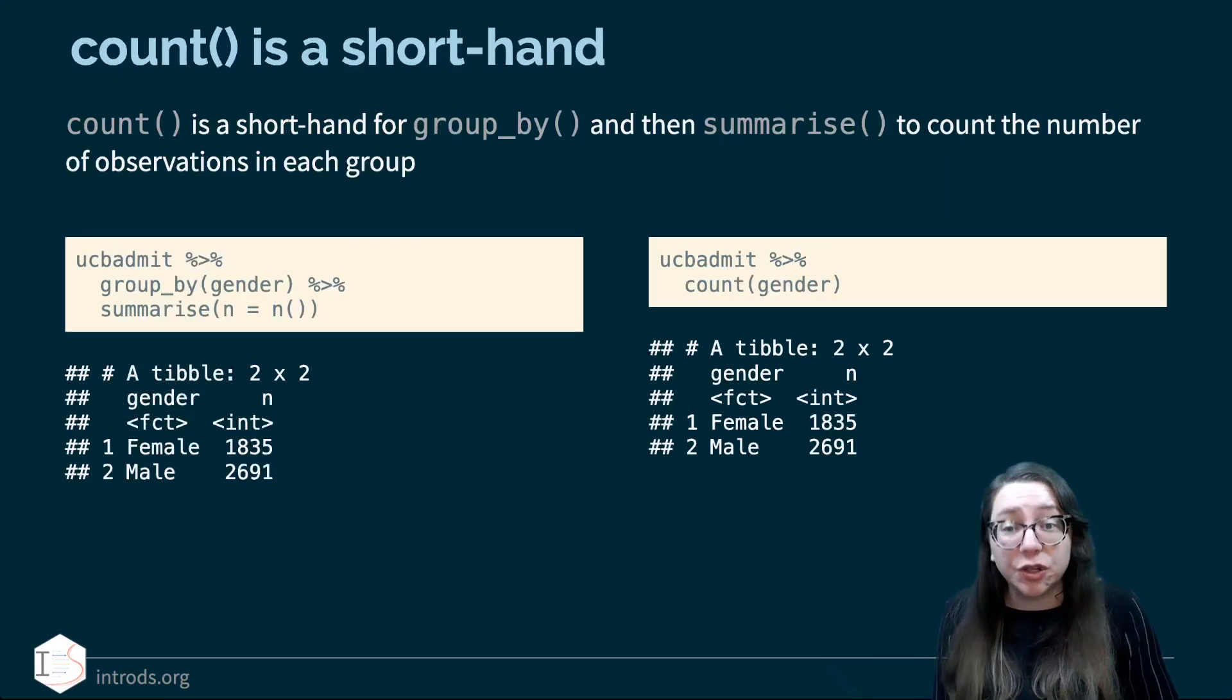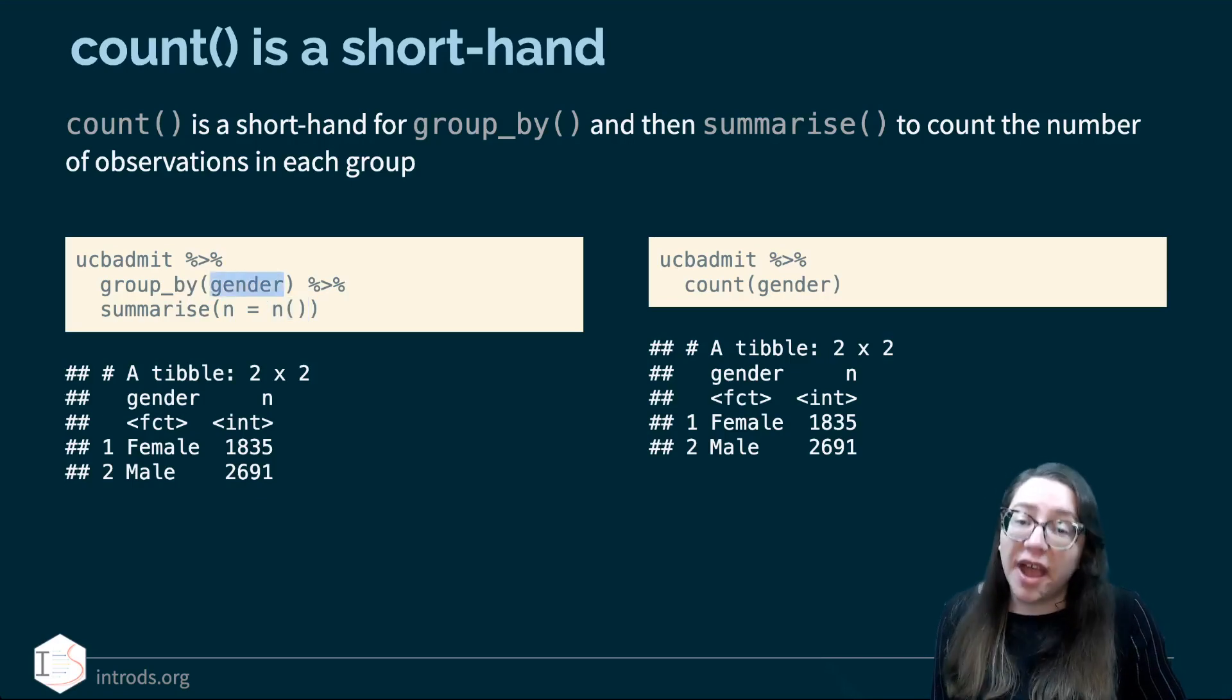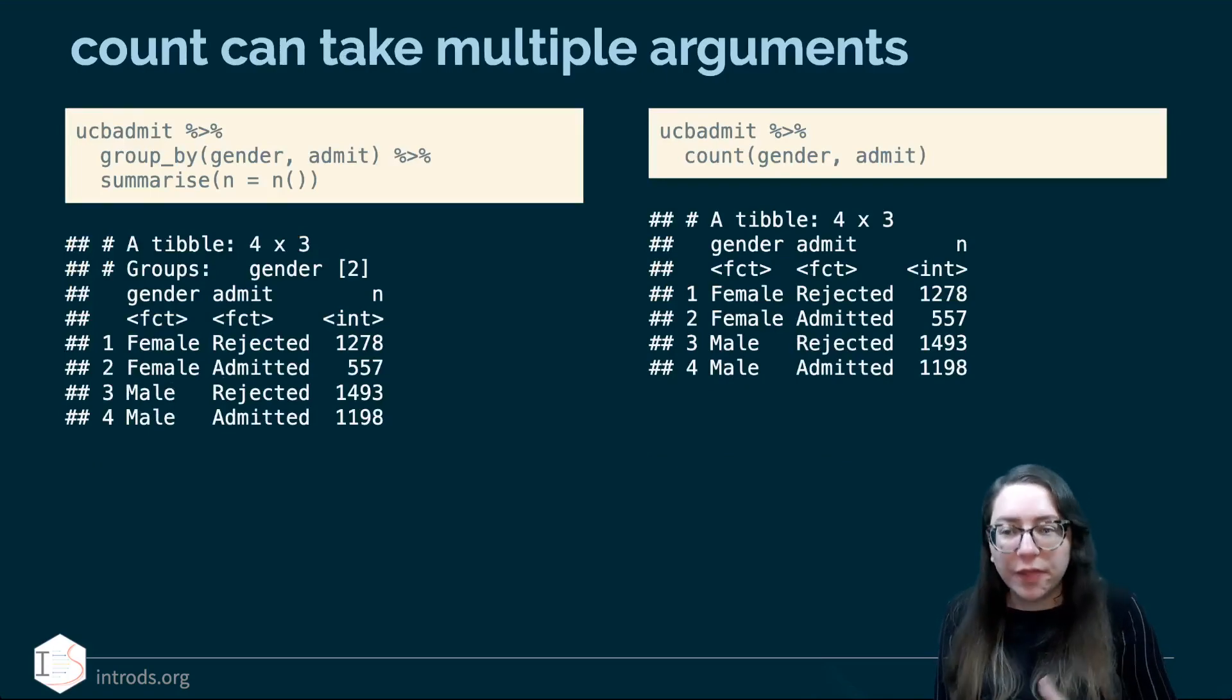Count, on the other hand, is a shorthand. It's a shorthand for GroupBy and then summarize to count the number of observations in each group. So instead of doing GroupByGender and then summarize to create a new variable called n that counts the number of occurrences for each of the levels of gender, I can simply say take the data frame and count the genders in it. The frequency tables that are presented to us look exactly the same. But actually, there's a little bit of a difference between their behaviors. One thing to keep in mind is that count can take multiple arguments. Just like GroupBy and summarize can do as well. So we could say I want to GroupByGender and then whether the applicant was admitted or not and then do the summarization to do the counts this way. Or I could simply tag along the multiple variables into the count function and get the same result out.